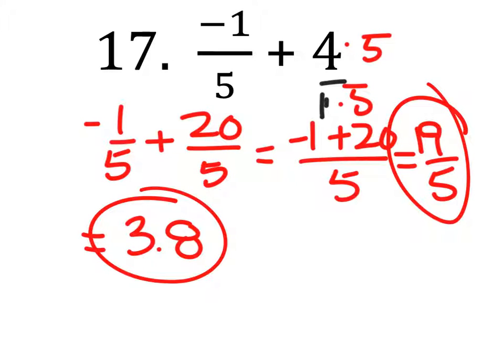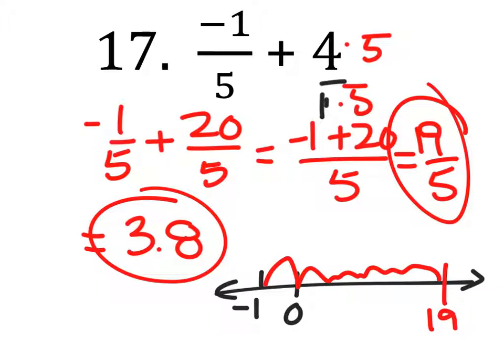19 fifths or 3.8 is the answer. If we looked at a number line, which started at negative 1, then would go to 0, and then would go another 19, and that would give us 19.